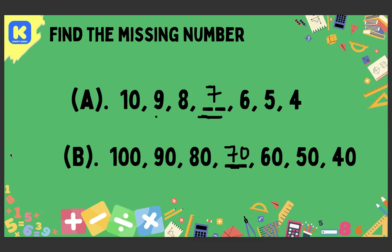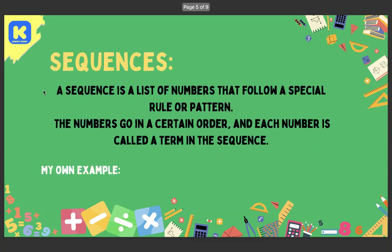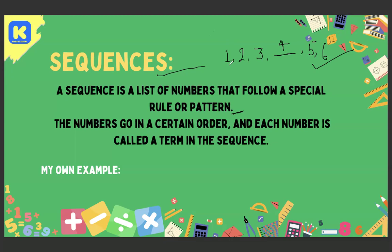All of those are called sequences — we solved four questions from the topic of sequences. So what is a sequence? A sequence is a list of numbers that follows a special rule or pattern. In the example 1, 2, 3, _, 5, 6, we filled in 4. The rule is that every time we increase by one: 1, then add 1 to get 2, then 3, then 4, then 5, then 6.